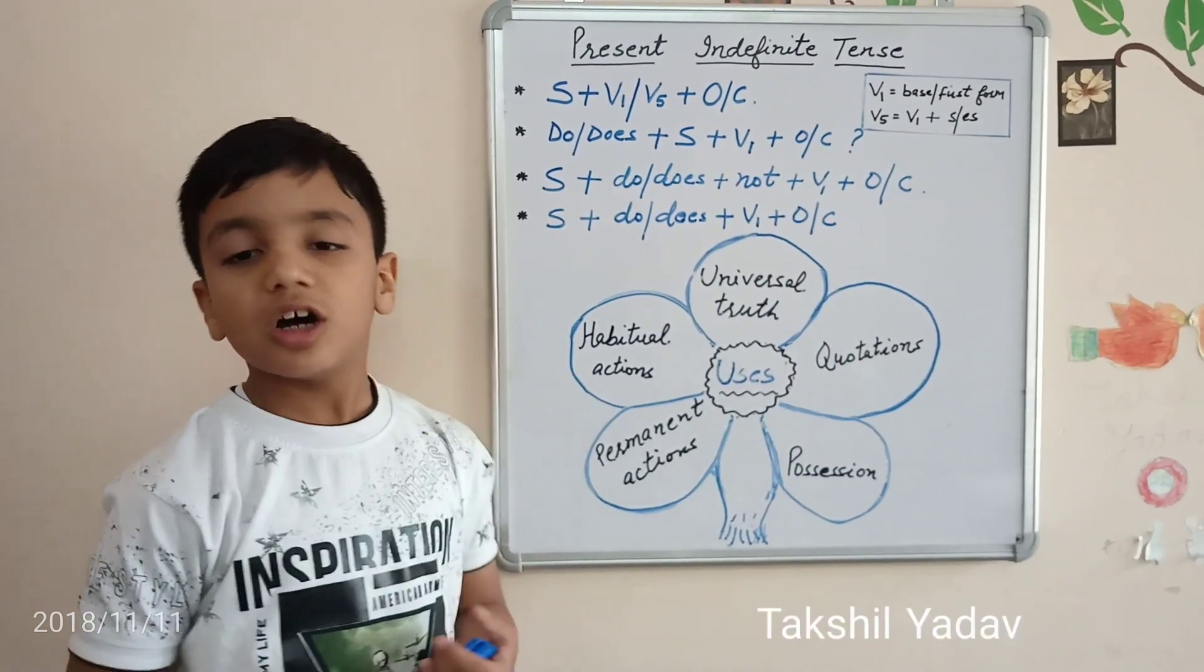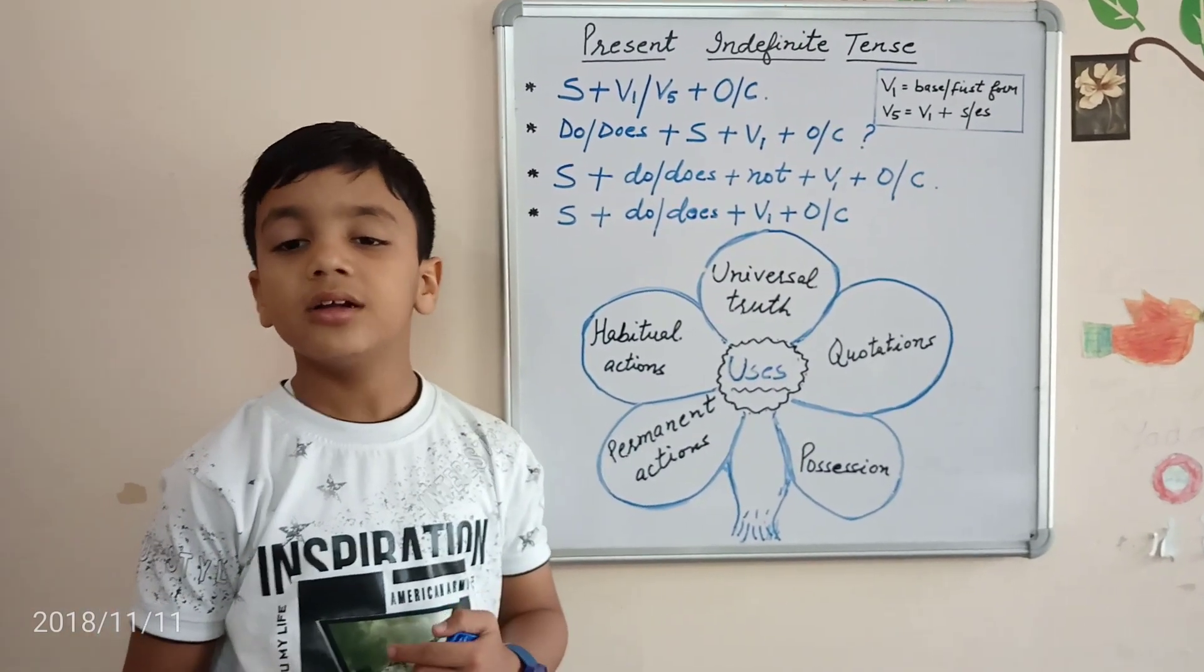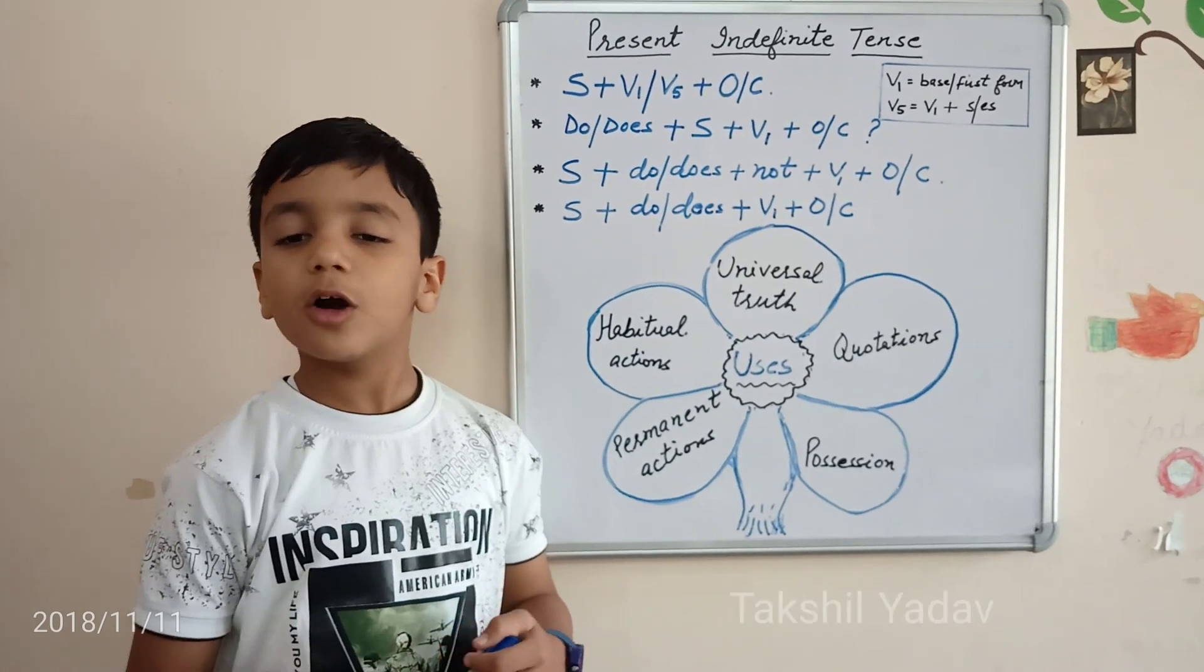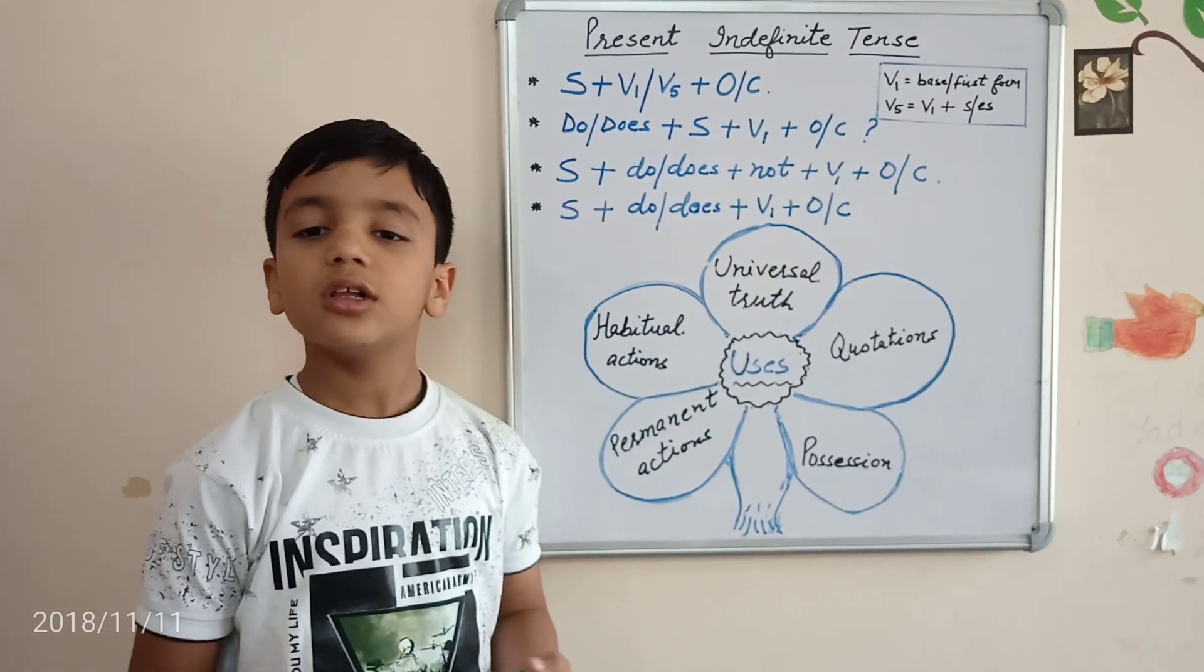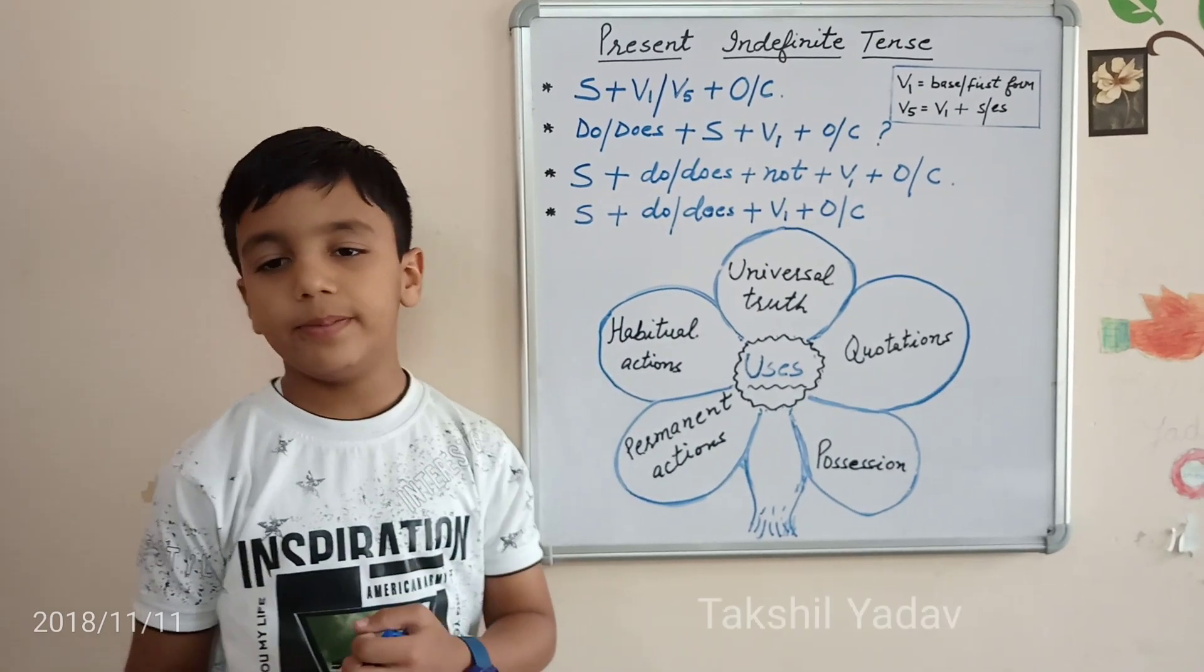Quotations: Abraham Lincoln says that Democracy is the government of the people, by the people and for the people.